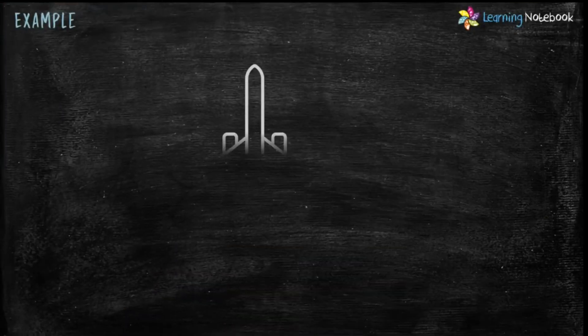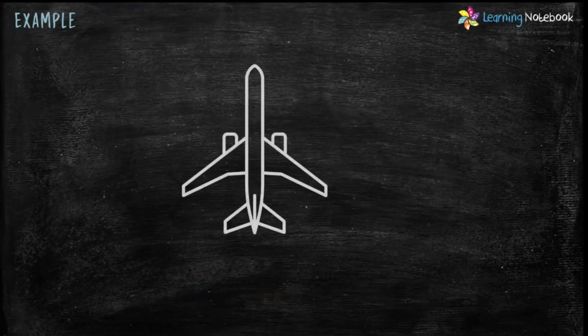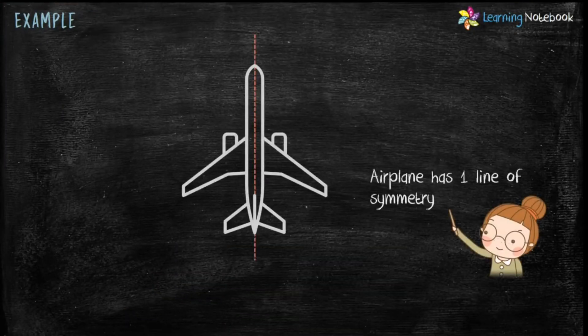An airplane has one line of symmetry. Similarly, we can find numerous other real life examples of line of symmetry.